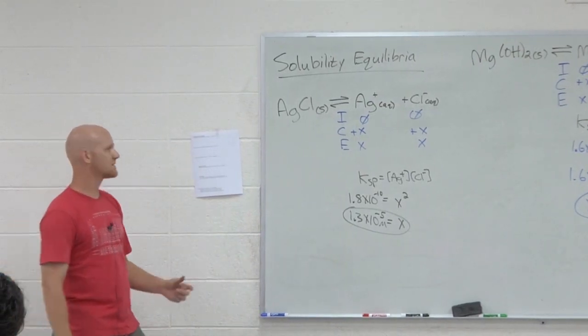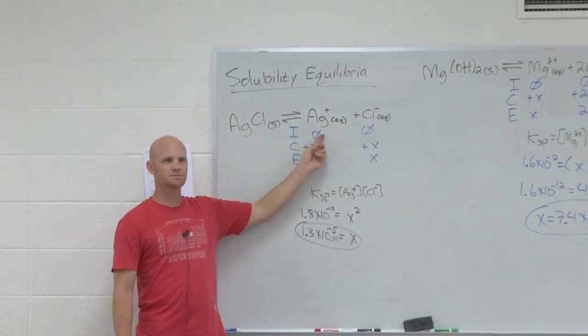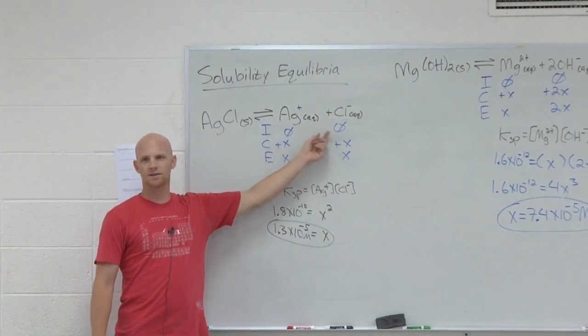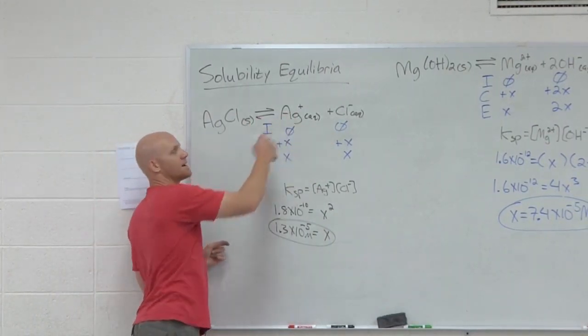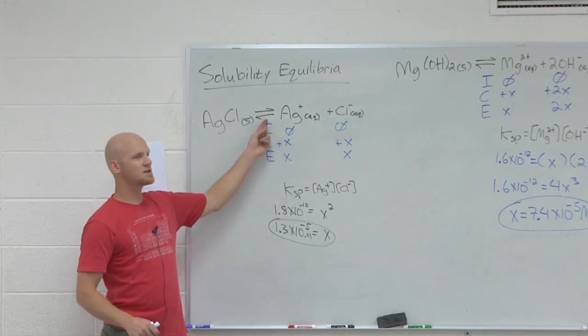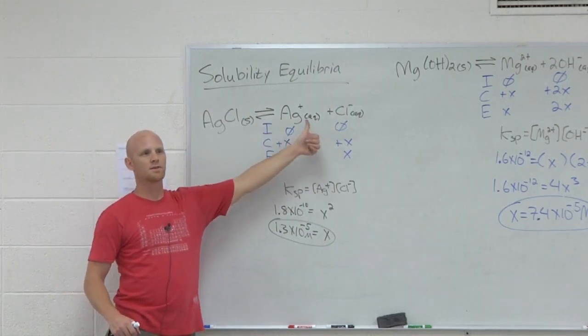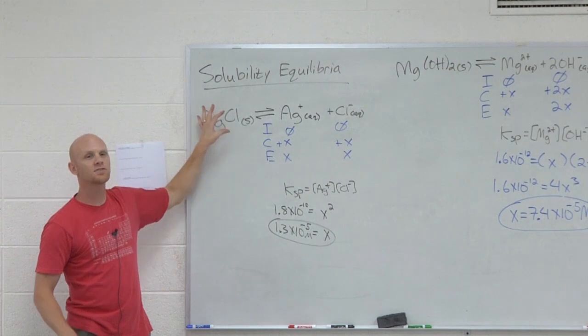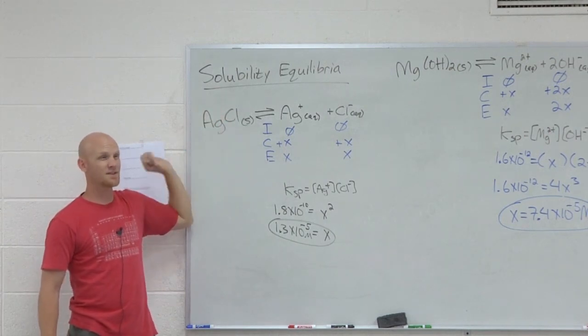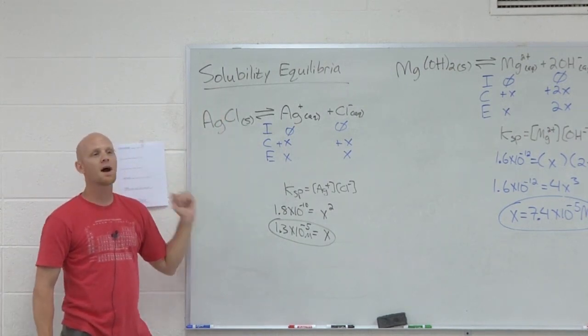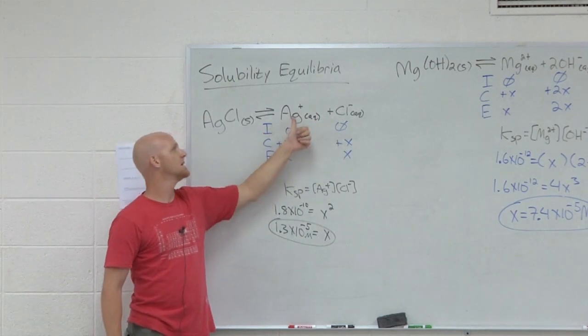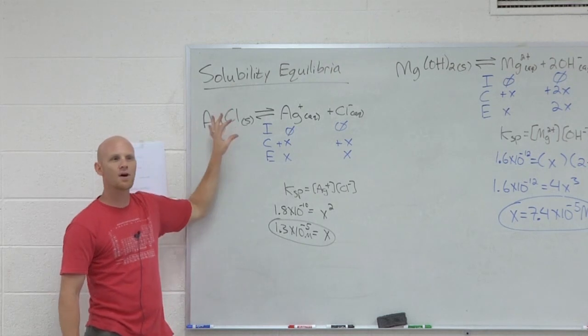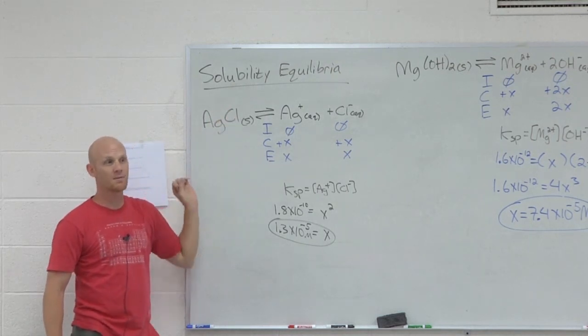Common ion effect. If you notice, does pure water already have silver in it? Does it already have chloride ions in it? No, but what would happen to this equilibrium if I dumped a bunch of silver ions into the solution? Which way would it shift this equilibrium? To the left, which means a lot less solid would be dissolved. It would be a lot less soluble then. That's called the common ion effect.